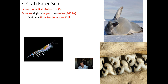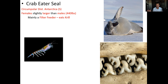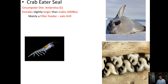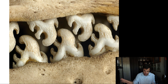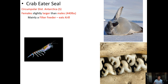The last pinniped is the crabeater seal, which also has a circumpolar distribution around Antarctica. Females are slightly larger than males, weighing around 440 pounds. Despite its name, the crabeater seal does not eat crabs — 90% or more of its diet is krill, a tiny shrimp-like animal. These animals are filter feeders: they take a big gulp of water and push it out through very specialized teeth that trap the krill.